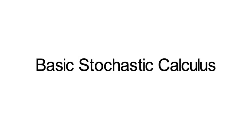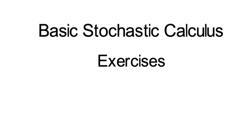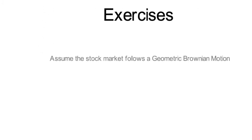This video provides you with an opportunity to practice your stochastic calculus. Assume the stock market follows a geometric Brownian motion. That says ds over s equals μ dt plus σ db, with μ and σ being constant and b being a Brownian motion.